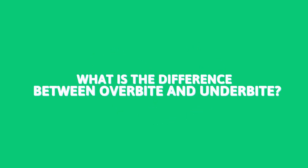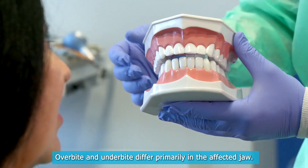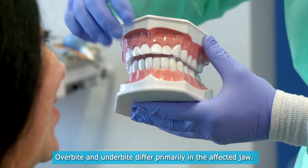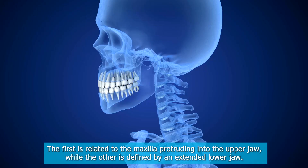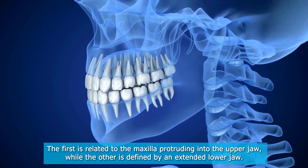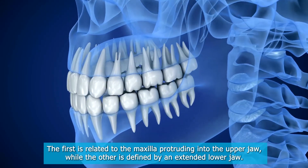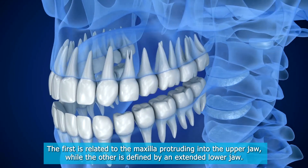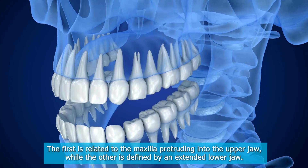What is the difference between overbite and underbite? Overbite and underbite differ primarily in the affected jaw. The first is related to the maxilla protruding into the upper jaw, while the other is defined by an extended lower jaw.